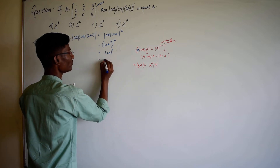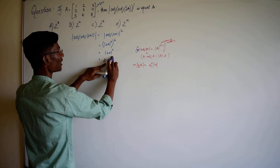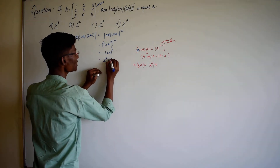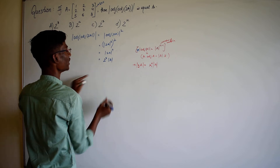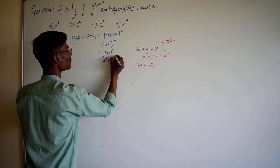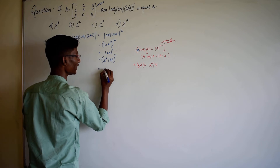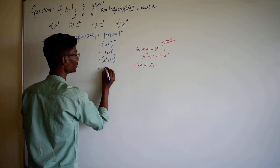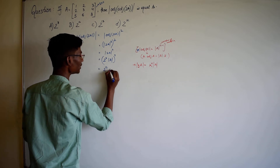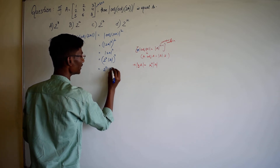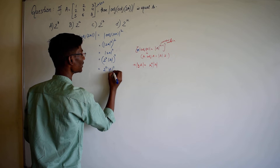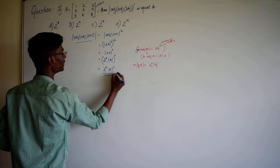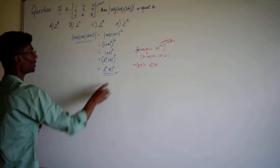Our constant is 2, so it will be 2 raised to power n, which is 3, times determinant of that matrix, whole raised to power n minus 1. So we get 2 raised to power 3 times 4, that is 12, times determinant of A raised to power 4. This expression is now simplified.